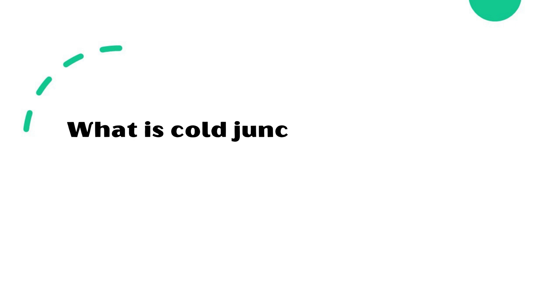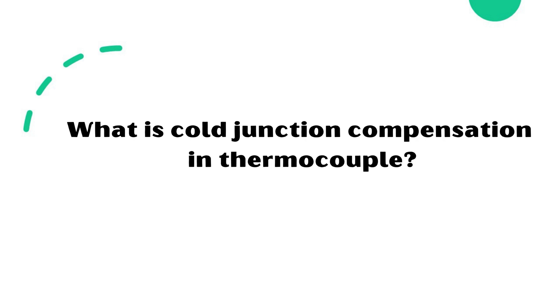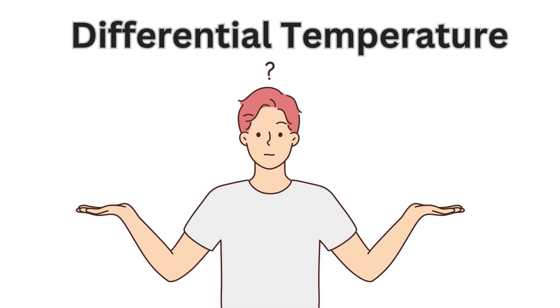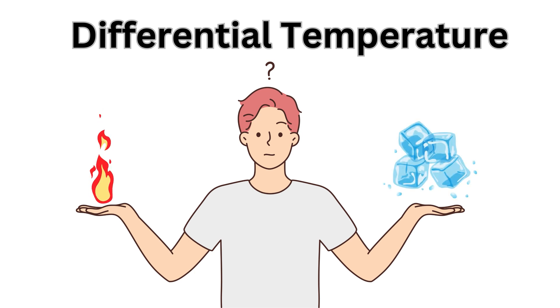What is cold junction compensation in thermocouples? A thermocouple actually measures a differential temperature, not the actual temperature at the hot end. In order to know what the temperature is at the hot end, you need to know the temperature at the other cold end.